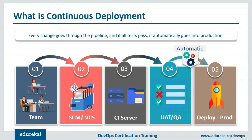We should not use continuous deployment without considering many factors before releasing software — such as channel and supplier support, trade shows, market events, and compliance demands. You have to consider marketing factors before releasing your product to the world. But we must do continuous delivery so that you have the capability to deliver the software to any environment at any time as needed.